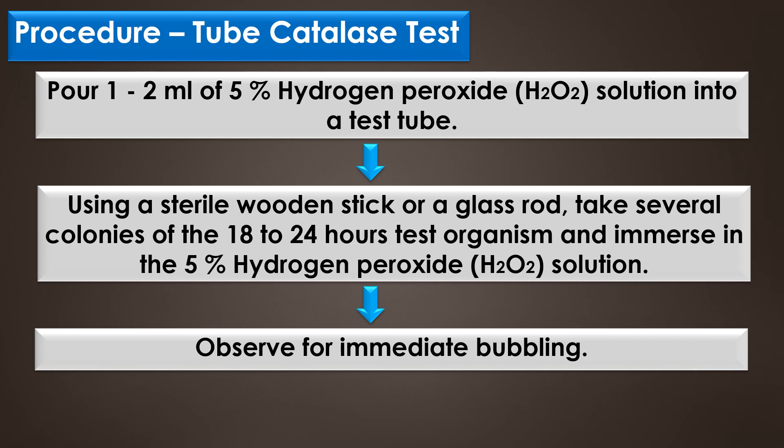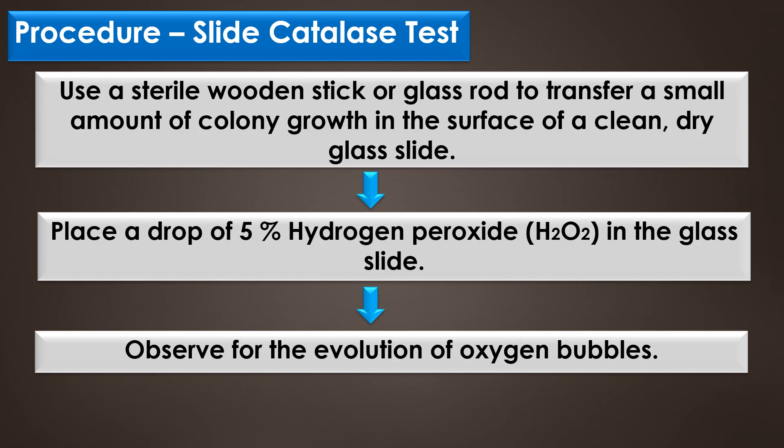Procedure for the slide catalase test: First, use a sterile wooden stick or glass rod to transfer a small amount of colony growth onto the surface of a clean, dry glass slide. Then place a drop of 5% hydrogen peroxide on the glass slide and observe for the evolution of oxygen bubbles.